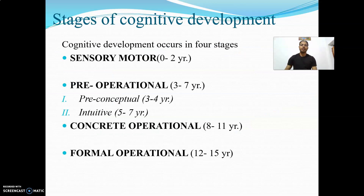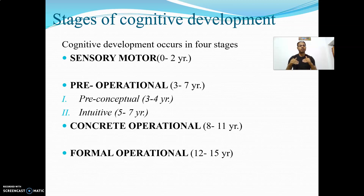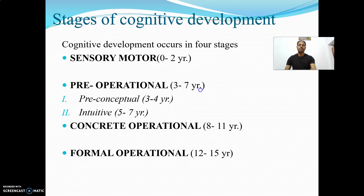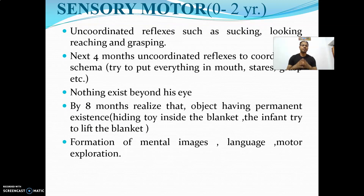There are four stages of cognitive development according to Piaget. The first is the sensory motor stage, from 0 to 2 years. The second is the pre-operational stage, from 3 to 7 years, which is further divided into two parts: the pre-conceptual phase (3 to 4 years) and the intuitive phase (5 to 7 years). The third is the concrete operational stage, from 8 to 11 years. The fourth is the formal operational stage.